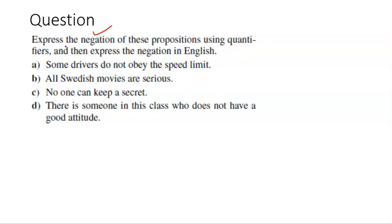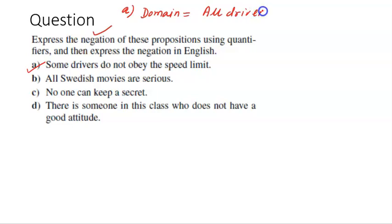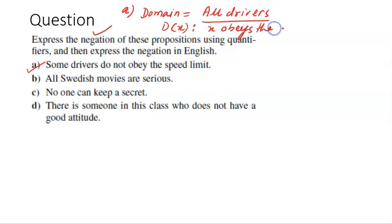The first part is to represent the statement using quantifiers. Second, we need to write its negation, and finally, translate it into English. Before we do all of this, the first thing we have to do is define the domain, so that whenever we are solving a problem like this, our domain of discourse is clear. The domain here I consider is the set of all drivers. Next, I am defining the propositional function D(x): that x obeys the speed limit.